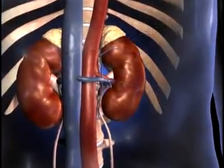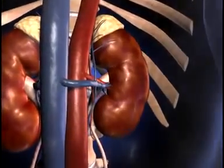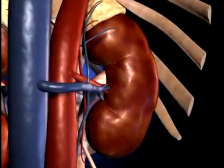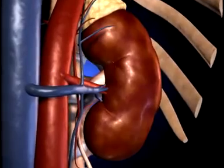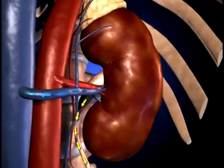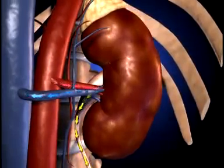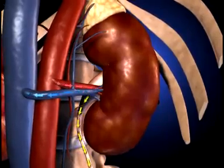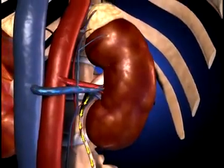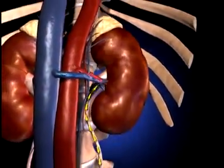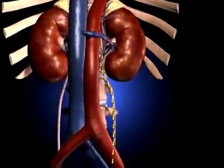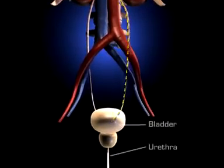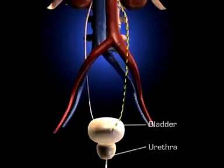The kidneys are paired, bean-shaped organs lying outside the peritoneal cavity in the back of the upper abdomen, one on each side of the vertebral column. The kidneys function as the body's main excretory organs, eliminating the body's metabolic waste products by filtering the blood. Substances that are unneeded or are present in excess are filtered out of the blood and form into urine, moving via the ureter into the bladder before being expelled through the urethra.